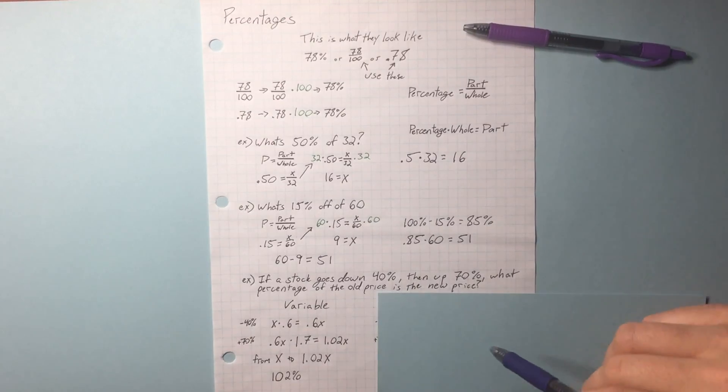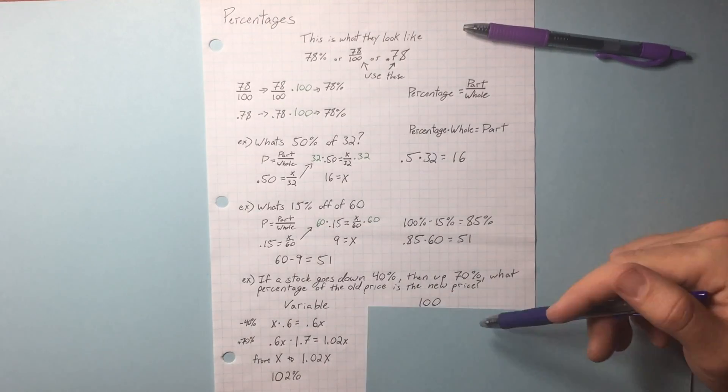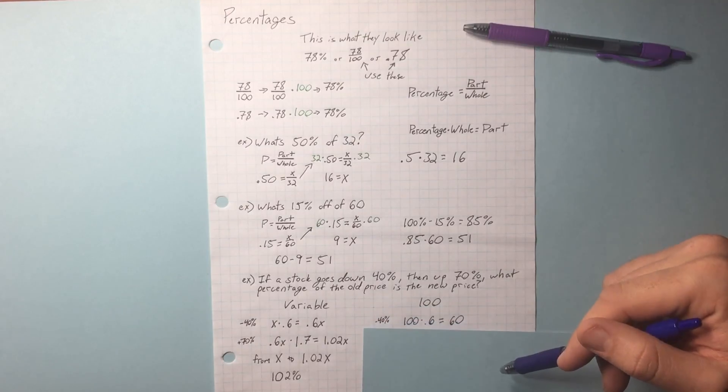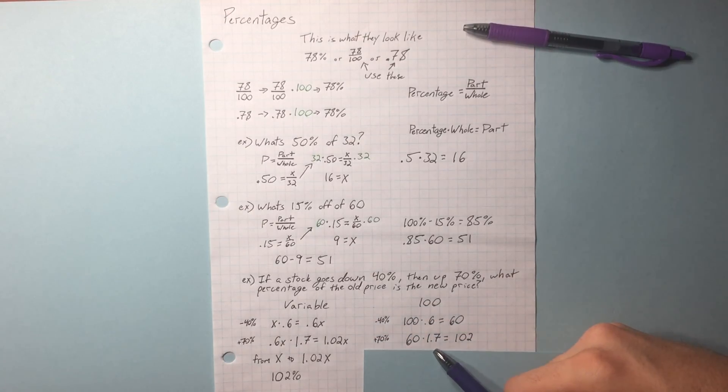If you don't want to find the variable, you can just pick a number for the stock. So if the stock's 100 bucks, we take our 40% off. Then we add our 70%, 102. So we're going to get the same answer anyways, right? Either way works.